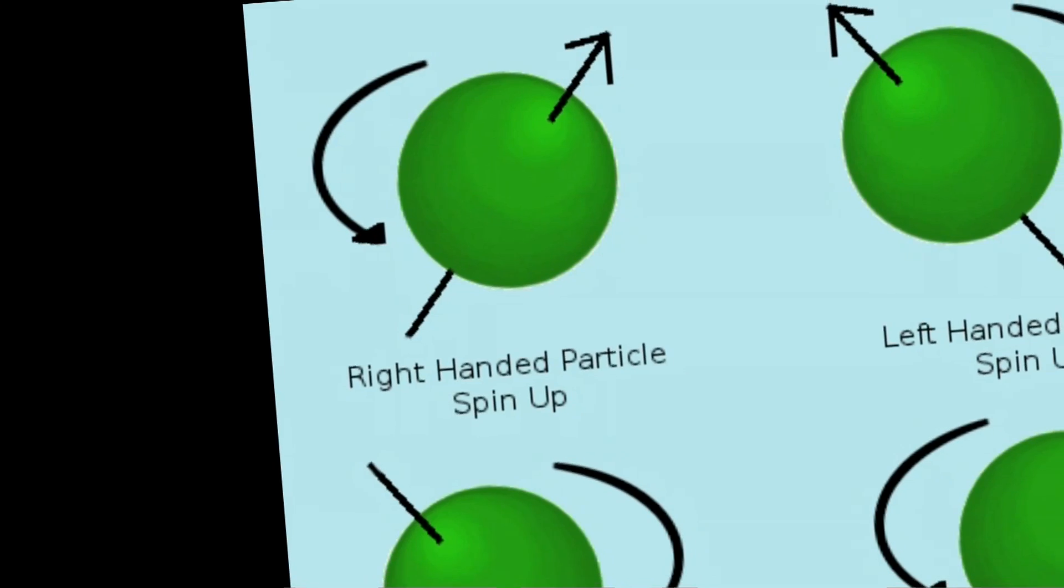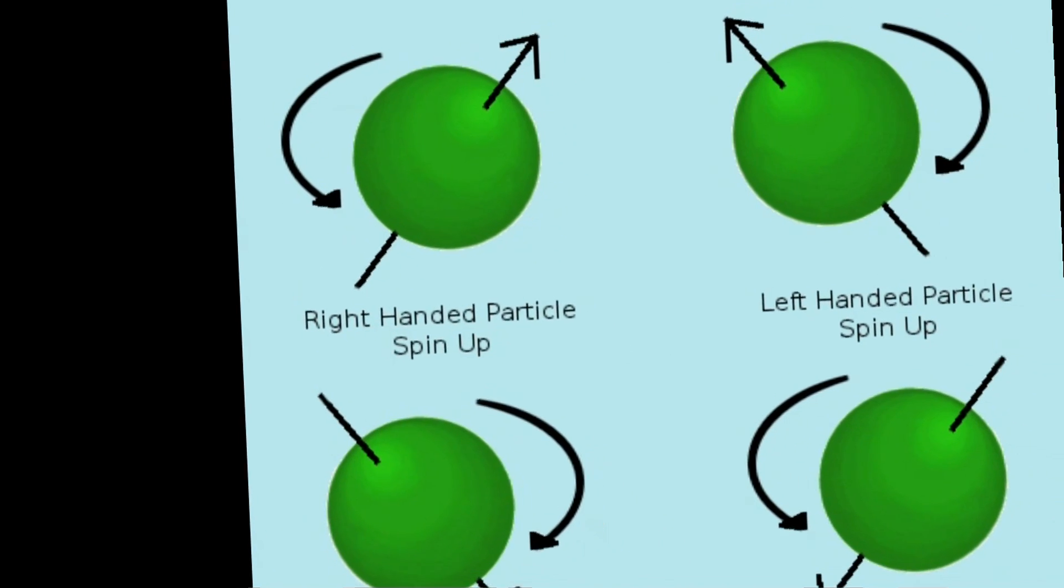But once one goes into the world of quantum physics, that analogy doesn't really work anymore. Today, we rather like to think about it as being one characteristic of a particle, which tells us what type of particle it is.